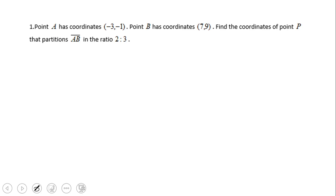And now let's take a look at this problem, which is similar to that one. You need a lot of graph paper, right? So now they still have to do a partition. Point A: negative 3, negative 1. Point B: 7, 9. But ratio 2 to 3.